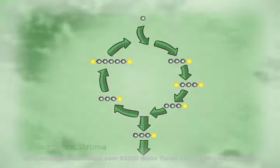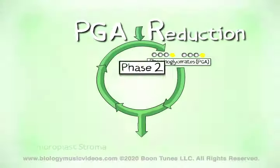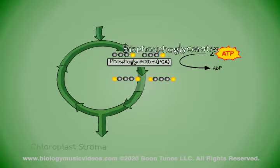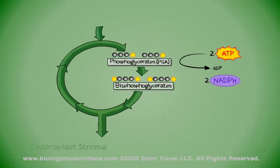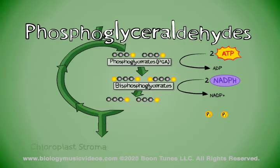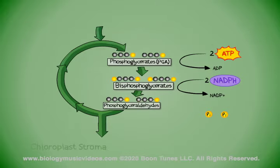Now I will explain to you PGA reduction, or phase 2. ATP molecules give phosphate to the PGAs, or phosphoglycerate. Bisphosphoglycerates are produced, which NADPH will reduce. The bisphosphoglycerates now are changed and they lose phosphate from the carbon chains. This reaction therefore provides phosphoglyceraldehydes — a complex chemical name, so we'll call them PGAL just the same.